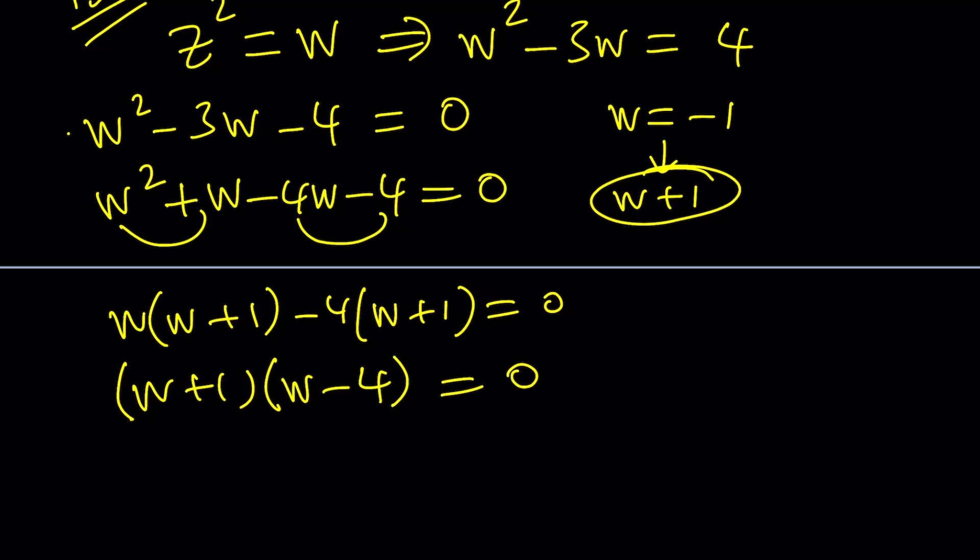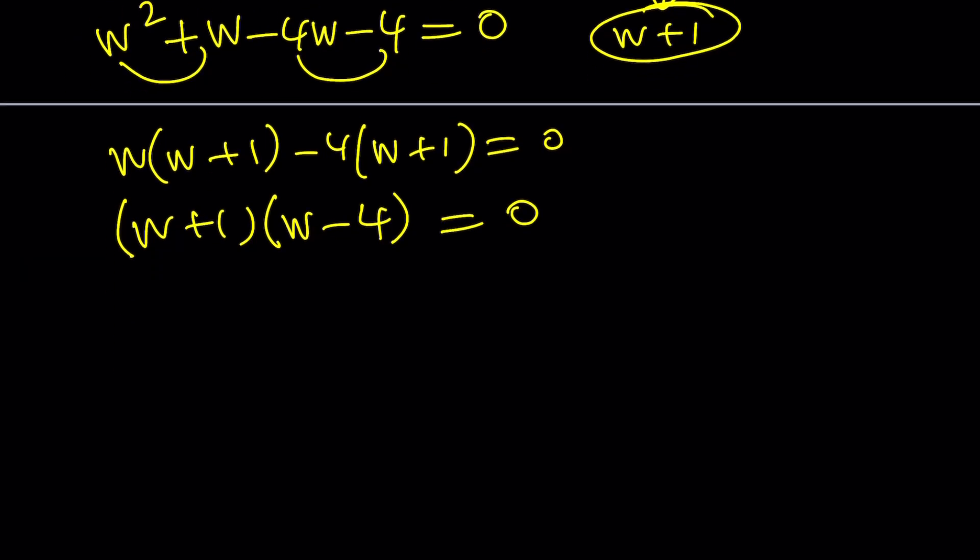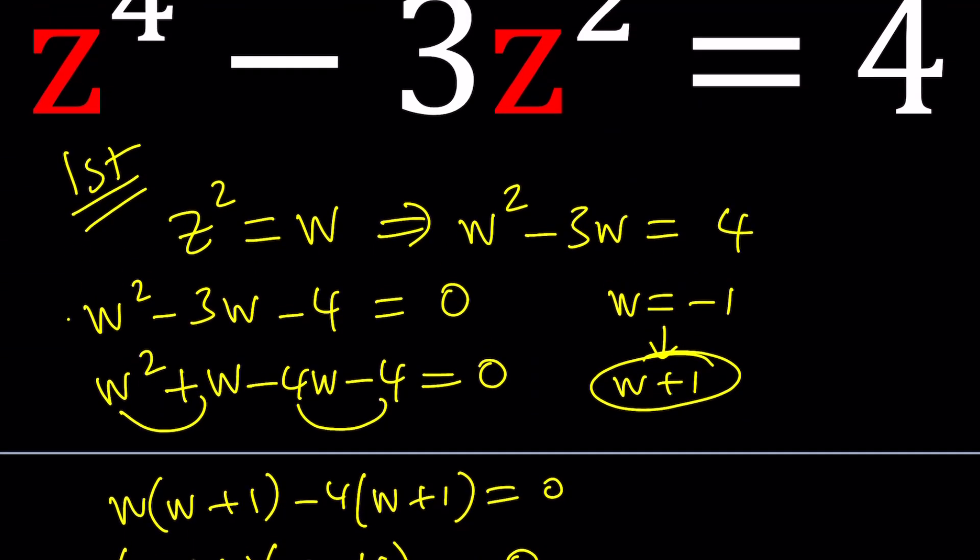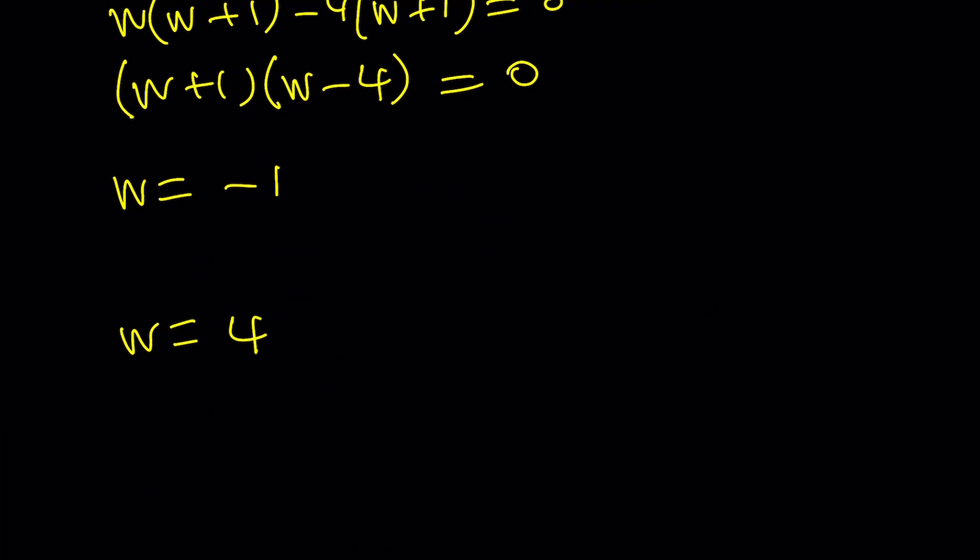We already talked about it, w plus 1 is a factor, so we did it intentionally and now the other factor is going to be w minus 4. So from here we get two solutions: w equals negative 1 and w equals 4. Let's go ahead and take a look at each case. Now remember w is z squared, right? So we're going to go ahead and back substitute, replace w with z squared. If z squared is equal to negative 1, wait a minute, there are no real solutions. Well isn't this channel all about complex numbers? Exactly.